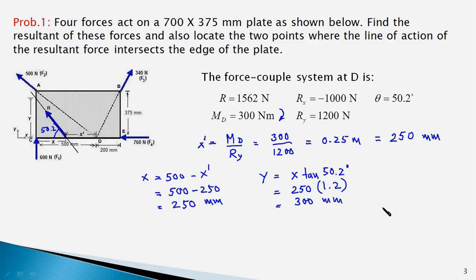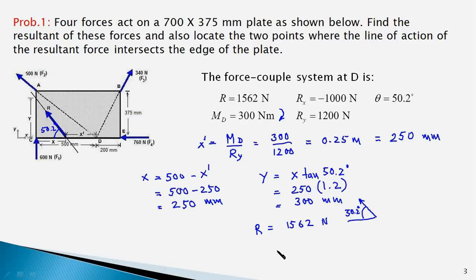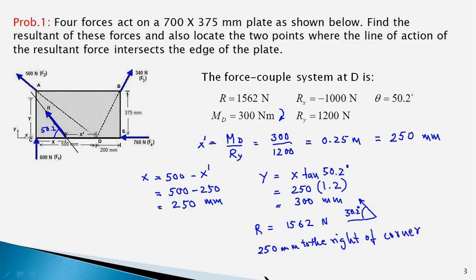This works out to 250 mm times 1.2, equal to 300 mm. So the single resultant is 1562 Newton making an angle of 50.2 degrees with the minus x axis. The intercept of the line of action of force R gives a point 250 mm from the bottom edge and 300 mm to the right of corner C, and another point 300 mm above corner C.